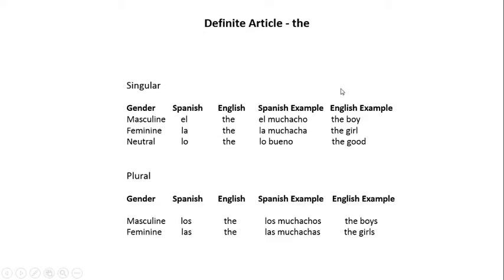In English, 'the' is just plain old 'the'. In Spanish, there are five variations of 'the' depending on the usage. I've broken down all those variations in a chart to help you understand. The masculine singular version of 'the' is 'el' — for example, 'el muchacho', the boy. The feminine singular version of 'the' is 'la' — for example, 'la muchacha', the girl.